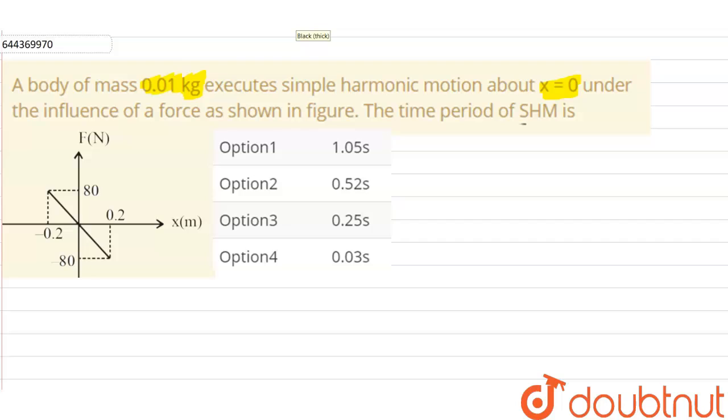We have to find the time period of the SHM of the body. Now we can see that the force is varying linearly with x, so we can write the equation of the graph as F equals mx plus c.